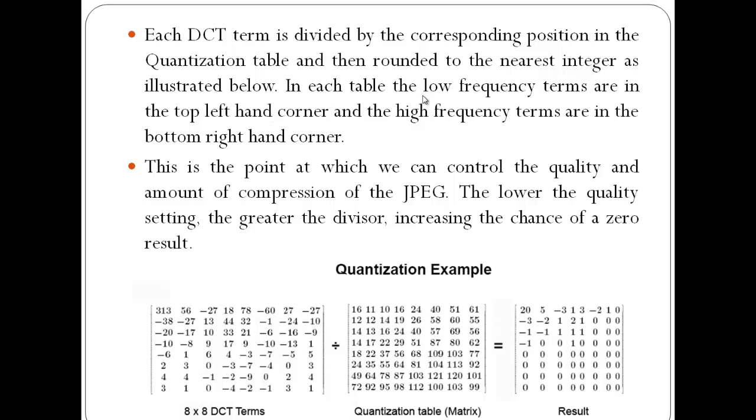In each table, the low frequency terms are in the top left hand corner and the high frequency components are in the bottom right corner. This is the point at which we can control the quality and amount of compression in the JPEG.